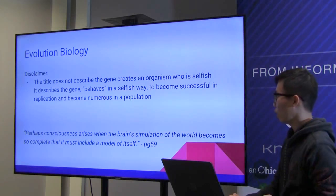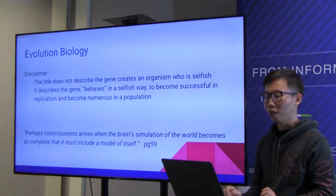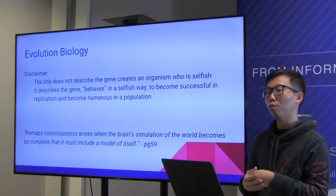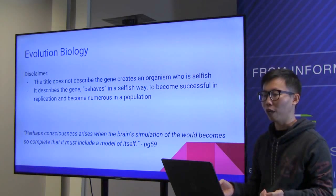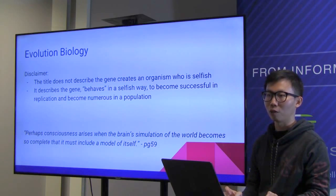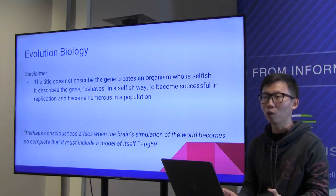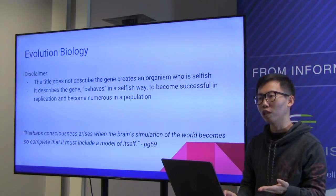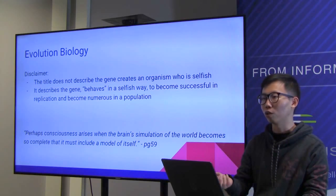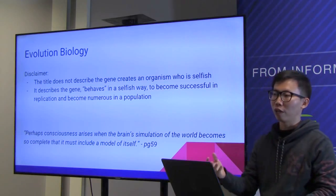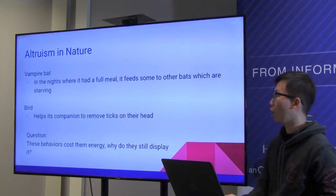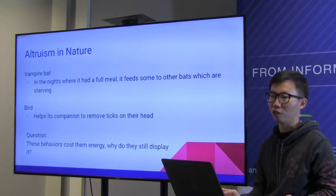In evolutionary biology, the theory is survival of the fittest. To become fit in nature, we'd assume an organism wants to get as many resources as possible at the expense of others. Intuitively, a selfish organism would have more chance of success because it cares only for itself, takes all the resources, and can reproduce. But we see a lot of altruistic behavior in nature.